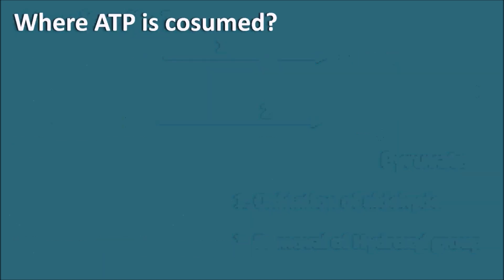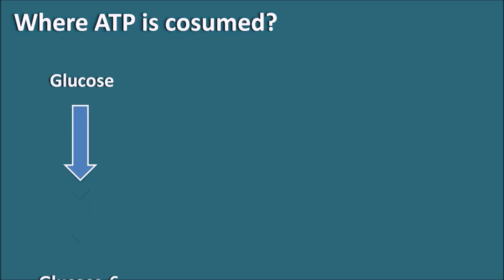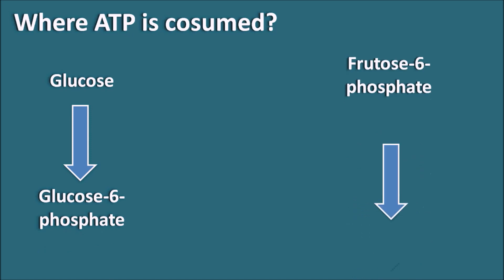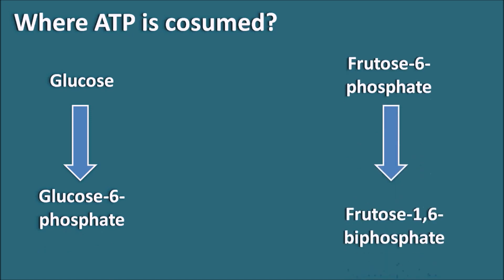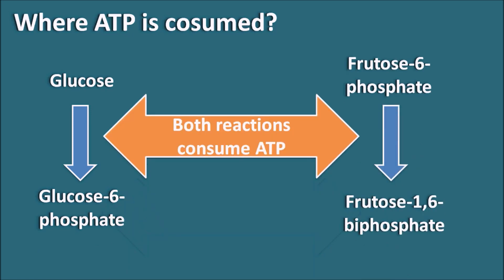With these points in mind, we can understand the last five steps of glycolysis and how pyruvate is formed. Two important ATP-consuming reactions are glucose converting to glucose-6-phosphate and fructose-6-phosphate converting to fructose-1,6-bisphosphate — both steps consume ATP.